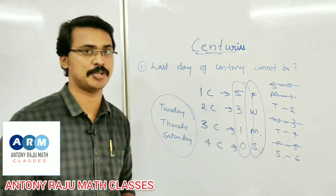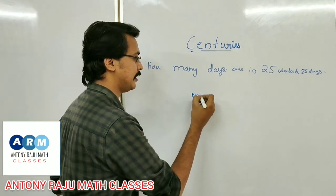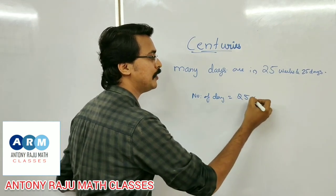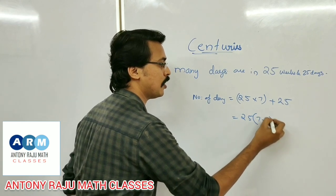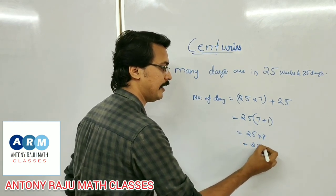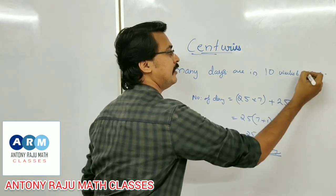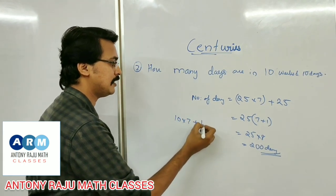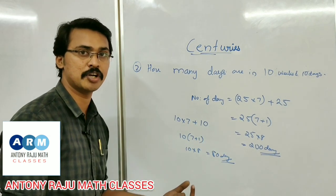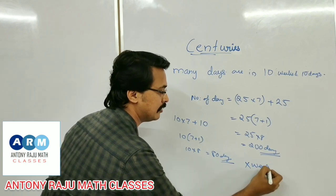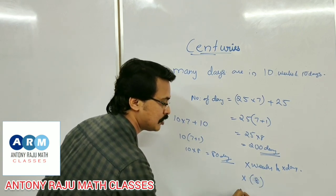The next question: how many days are in 25 weeks and 25 days? Number of days equals 25 into 7 plus 25, giving 25 in common: 25 into 8 equals 200 days. Similarly, 10 weeks and 10 days: 10 into 7 plus 10, taking 10 in common gives 10 into 8 equals 80 days. The general equation: x weeks and x days equals x into 7 plus x equals 8x days.